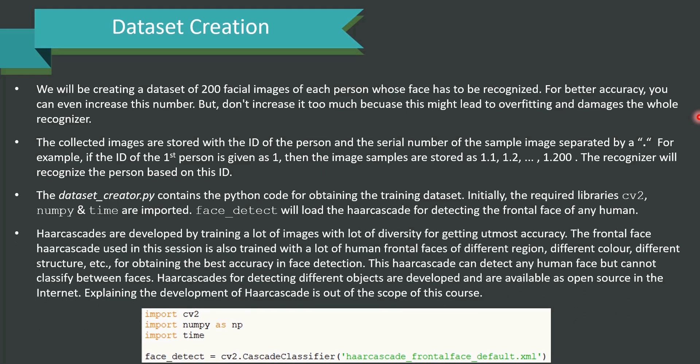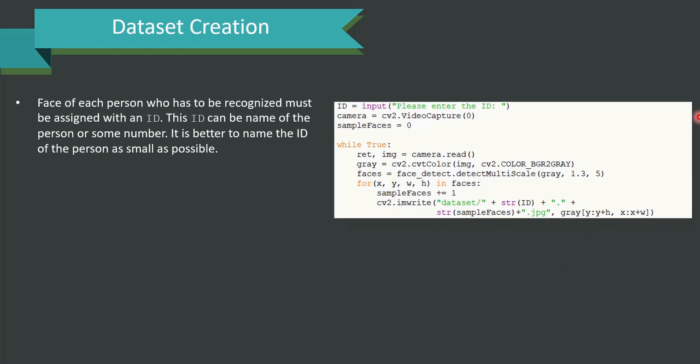It is very diversified and well-trained. This haar cascade can detect any human face but cannot classify between faces. Haar cascade for detecting different objects are developed and are available as open source on the internet. Explaining the development of haar cascade is out of the scope of this course. You can see the small piece of code which is presented where we have imported cv2, numpy and time. Also, we are using haar cascade frontal face default.xml and this is what was explained earlier.